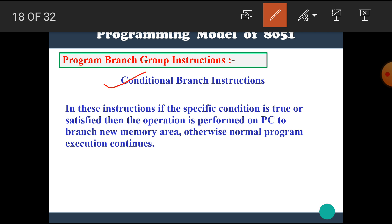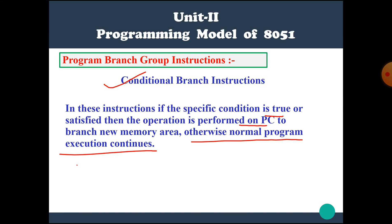Now let's see conditional branch instructions. In these instructions, if the specific condition is true or satisfied, then the operation is performed on the PC to branch to a new memory area. Otherwise, normal program execution continues. In conditional branch instructions, whenever the condition is satisfied, the operation is performed on the PC; if not satisfied, normal execution continues.